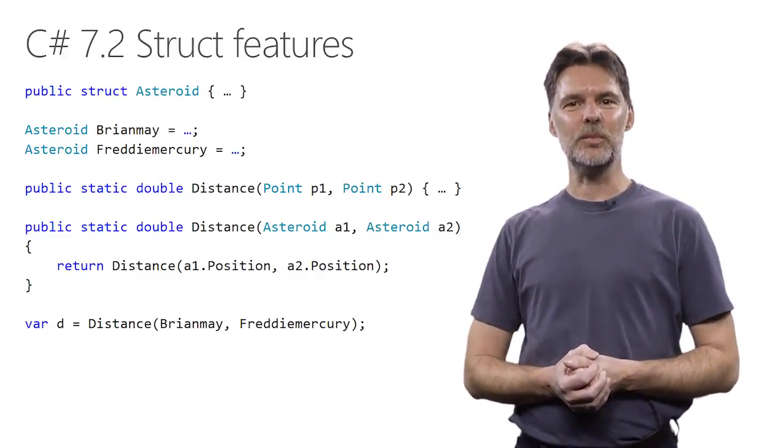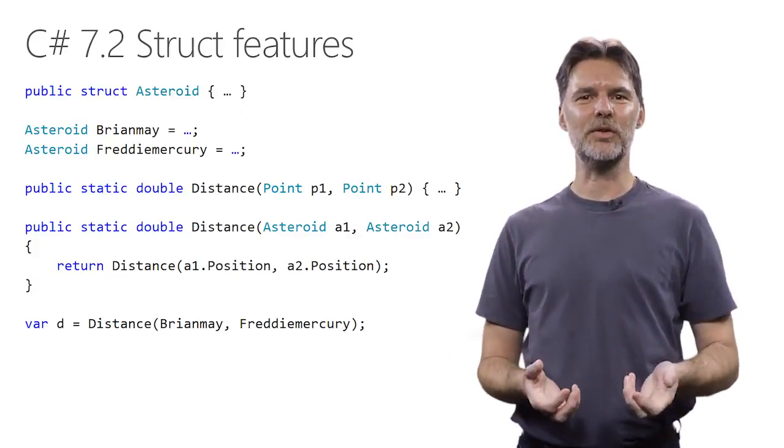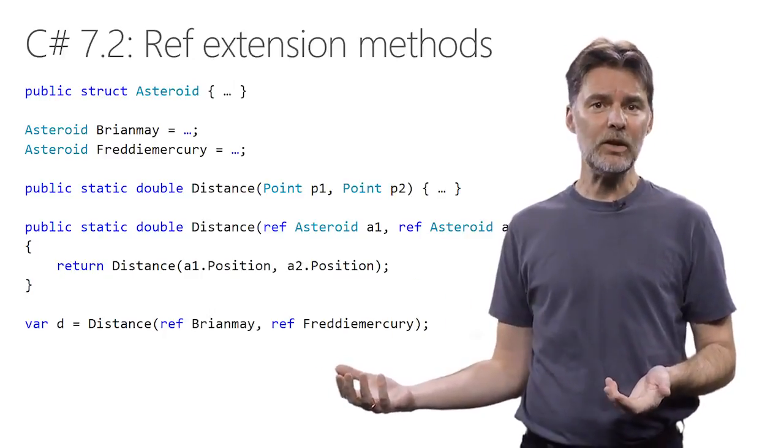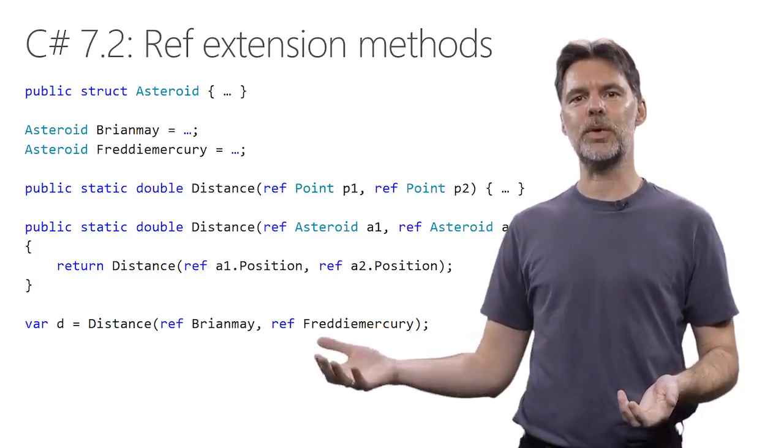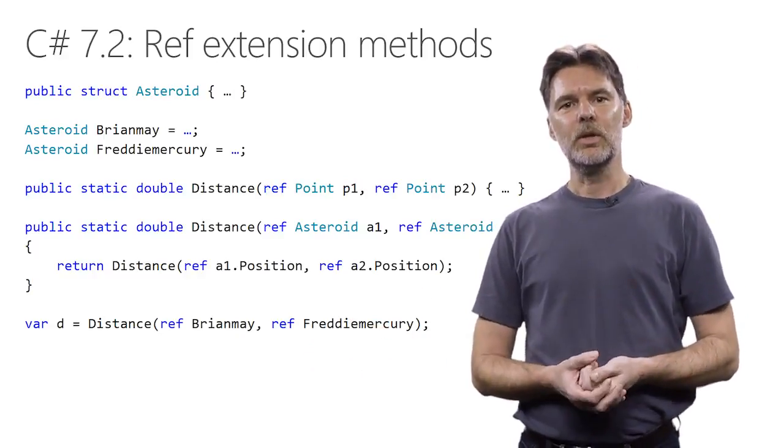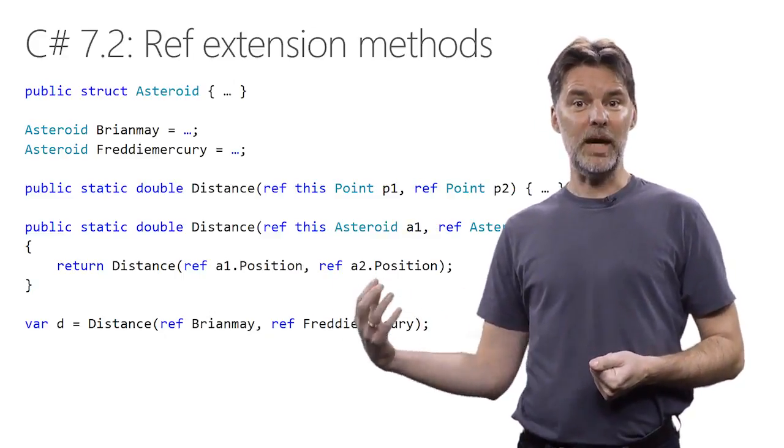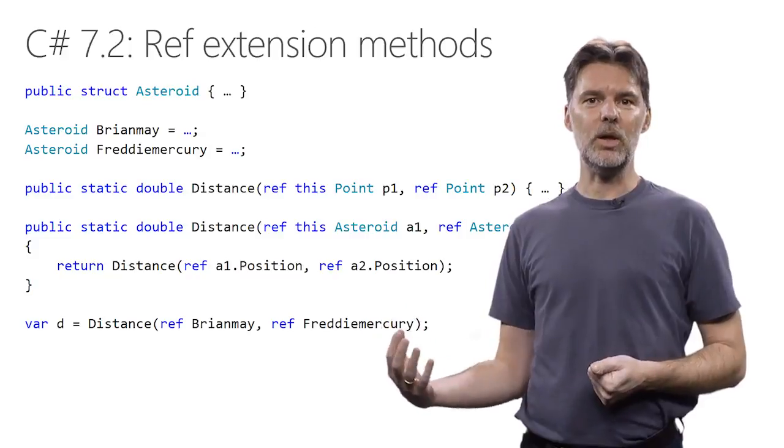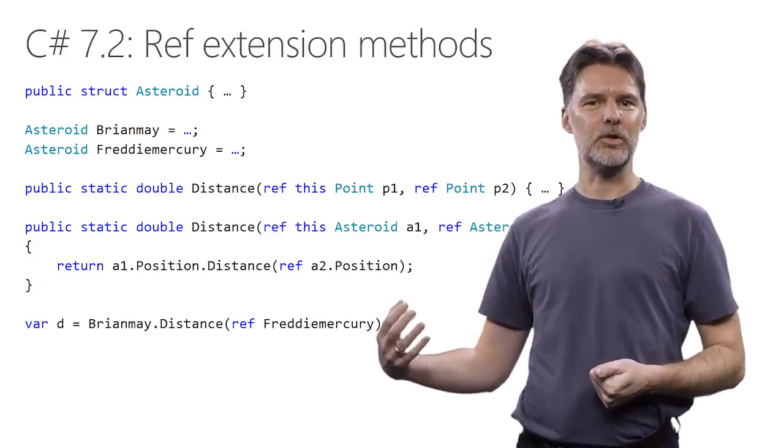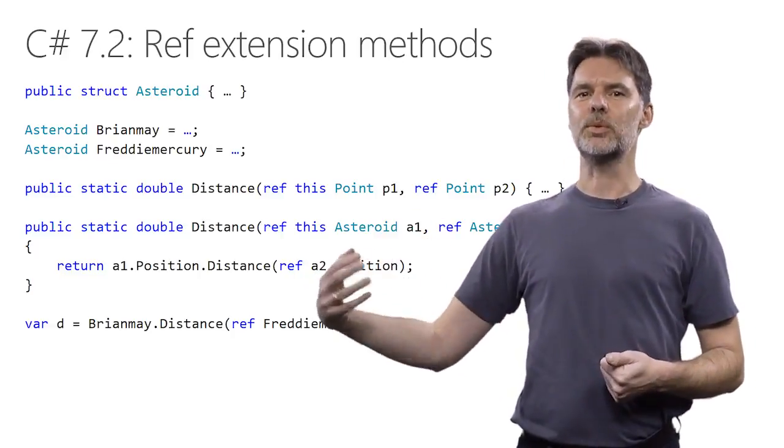But since asteroids can be big, we don't like copying them when we pass them to the method. It's common instead for the method to take ref parameters and pass the structs by reference. Assuming points are also structs in this example, we can pass those by ref as well and get a little more of a performance boost. Now, starting with C# 7.2, we allow the receiver of extension methods to also be passed by ref. So now we can call the distance methods using instance syntax dotting on the receiver, whereas previously you could only put extension methods on receivers that were value parameters.